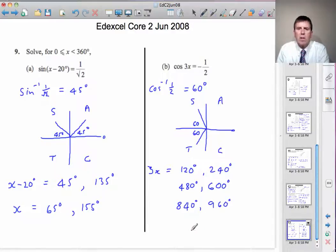Now, they're the values of 3x, which means that x is a third of each of these. So, 120 divided by 3, 40 degrees. 240 divided by 3, 80 degrees. 480 divided by 3 will be 160 degrees.